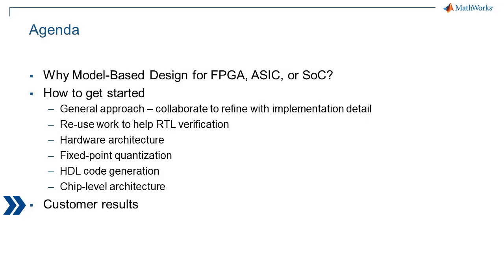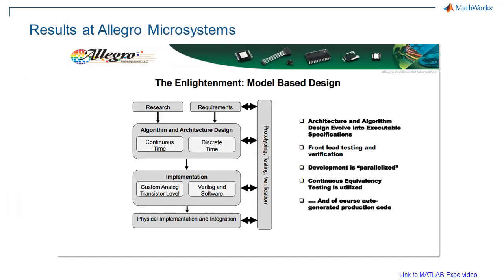Finally, let's revisit our customer example. These are the results that Allegro saw. They now design and simulate their analog and digital functionality together in Simulink, debugging issues early, and they refine it with implementation detail, continuously integrating their refined models for verification. This allows them to still parallelize their development while constantly verifying everything together to eliminate late surprises. Once they get to an implementation-ready model, they generate synthesizable RTL to go into implementation, and they also generate DPI components for their verification environment.